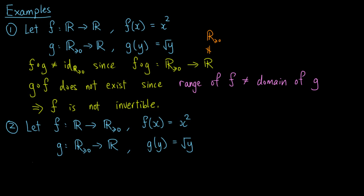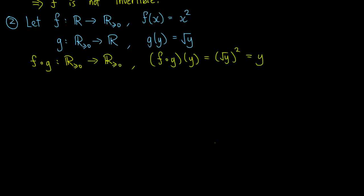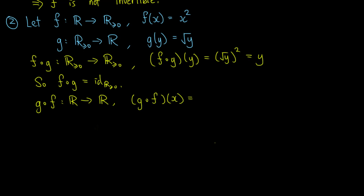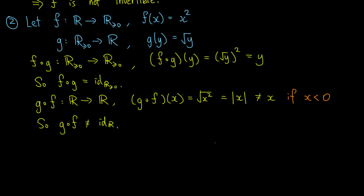As a second example, we restrict the range of f to the non-negative real numbers and keep g the same. Then f ∘ g is a function from the non-negative reals to itself, and (f ∘ g)(y) equals the square of the square root of y, which equals y. So f ∘ g is the identity function on the non-negative reals. Also, g ∘ f is a function from the real numbers to itself, defined by (g ∘ f)(x) equals the square root of x squared, which equals the absolute value of x, which is not equal to x if x is negative. So g ∘ f is not the identity function on the reals, and f is not invertible.